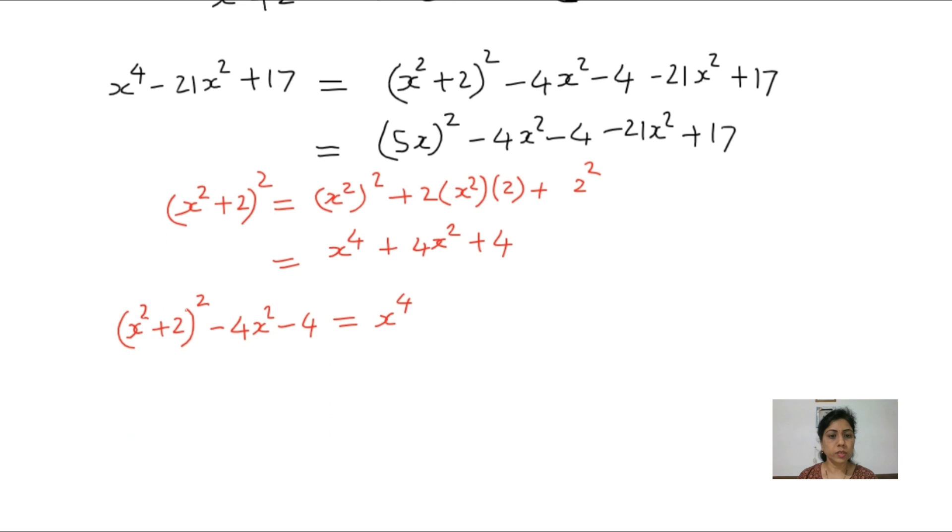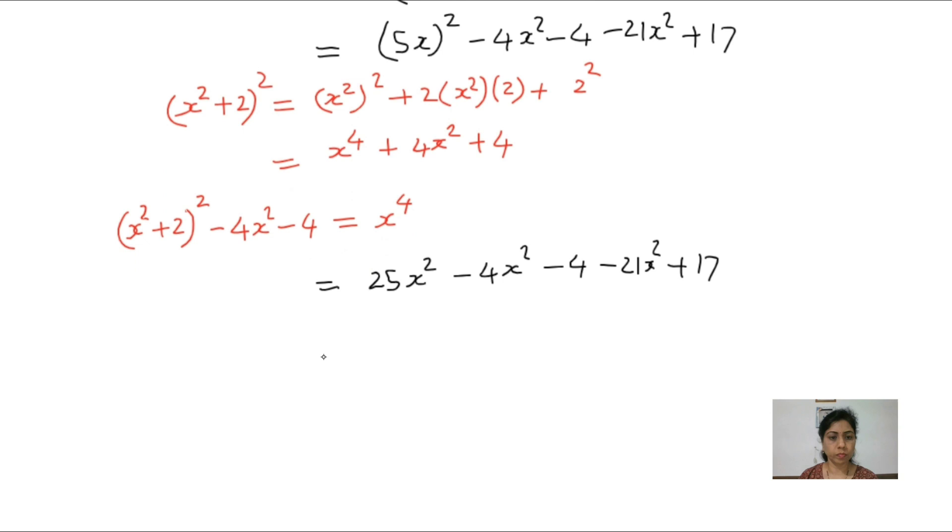Now what is 5x square? 5 square is 25x square minus 4x square minus 4 minus 21x square plus 17. And you can see here this is 25x square, and this one minus 4x square minus 21x square minus 25x square, and this one minus 4 and this 17. We can combine like terms, 17 minus 4 is 13. 25x square cancel with 25x square. This minus, that's why. And we got answer 13.